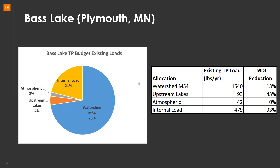While that might not seem like a significant source, Bass Lake also has a TMDL — a total maximum daily load reduction — developed because it is impaired for recreational use due to excessive nutrients. You can see on the table that the internal load requires a 93 percent load reduction per the TMDL. So this internal load needs to be reduced in addition to the ongoing work in the watershed and from the upstream lakes that also contribute phosphorus.